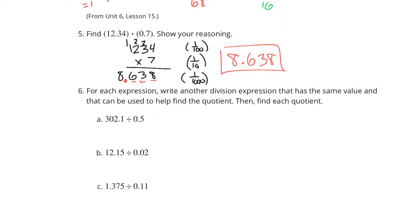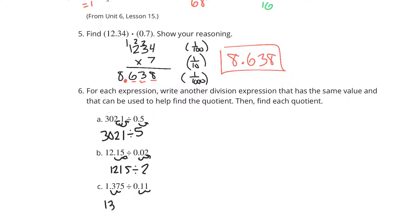For each expression, write another division expression that has the same value and can be used to help find the quotient, then find each quotient. You cannot have a decimal point in the divisor, so multiply both numbers by 10 to get 3,201 divided by 5. Multiply both by 100 to get 1,215 divided by 2. And multiply both by 10 twice to get 137 and 5 tenths divided by 11.